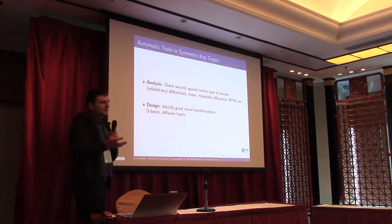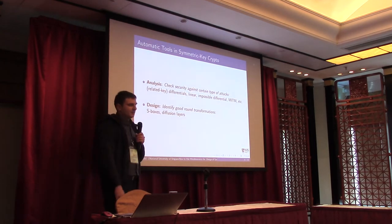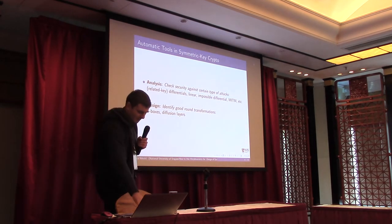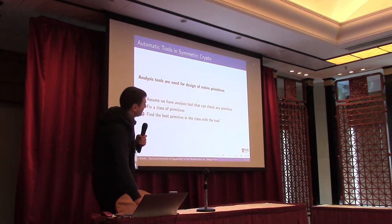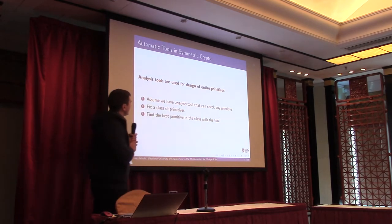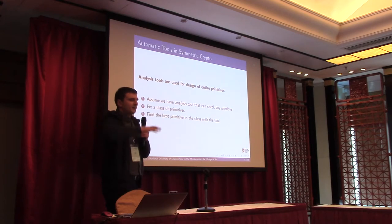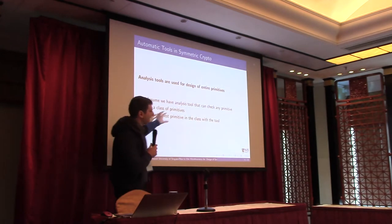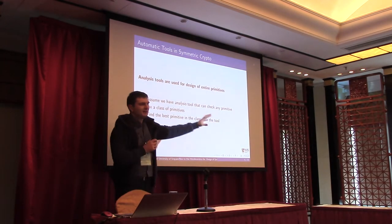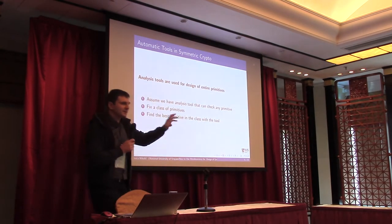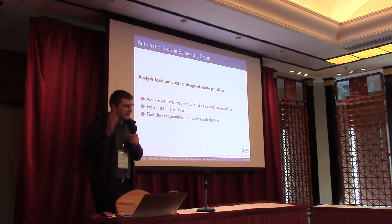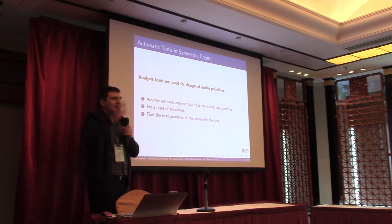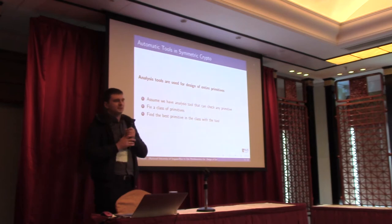For example, good S-boxes that satisfy certain criteria, good diffusion layers, and so on. We also use analysis tools for the design of entire primitives, not only round transformations. Basically, we assume we have an analysis tool that checks some primitive against a certain type of attack, then we fix a class of primitives and apply this tool to that class.